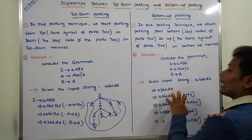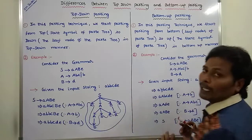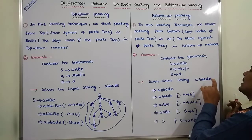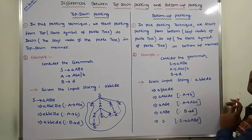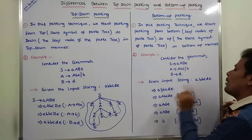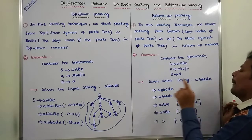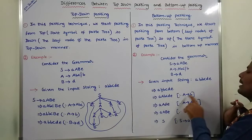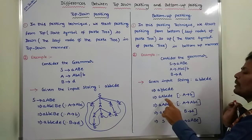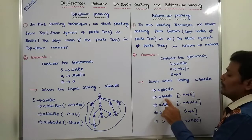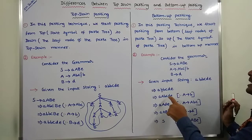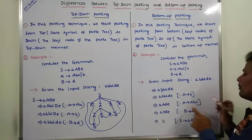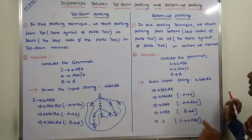This is the reverse process. First, we take the given string a, b, b, c, d, e. We have to replace small b by capital A using the production capital A equals b. Then, capital A, small b, small c can be replaced by capital A using this production.